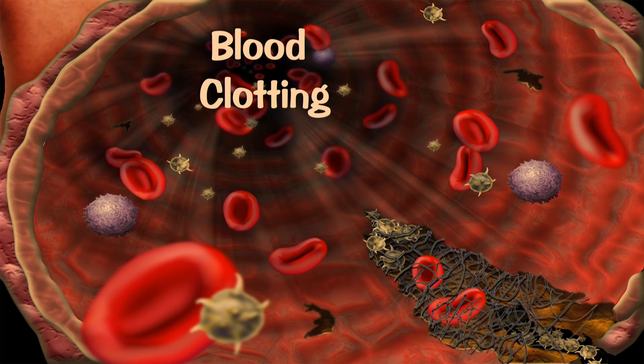This physiological chain of production — a cascade, as they call it — results in the formation of a solid obstruction, a clot, in order to seal over the damaged wound.